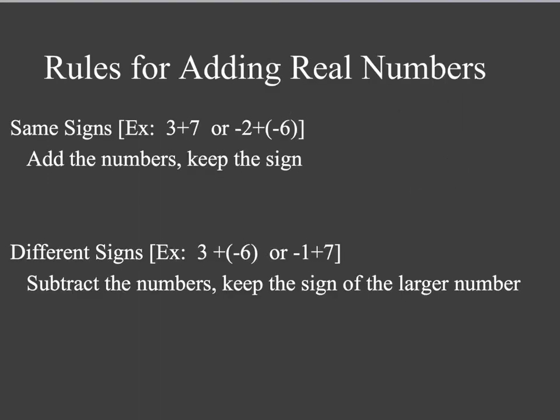So let's talk about rules for adding real numbers. Now, if you had me in class, I've talked about the elevator method or the jelly bean method, but here are the rules for adding them if you don't know those methods. We have same sign. So let's say we have the same sign, something like 3 plus 7, or negative 2 plus negative 6. You can see positive, positive, negative, negative. When the signs are the same, we add the numbers and keep the sign.